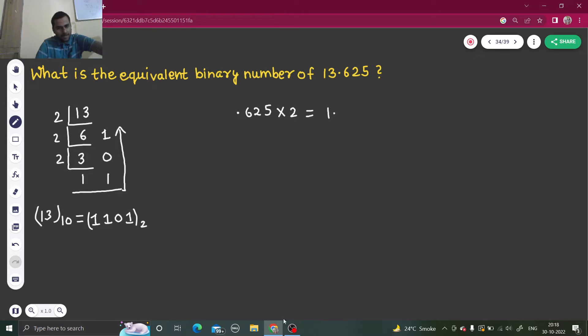What will you get? I think 625 times 2 is 1250, which means 1.250. Carefully listen: you have to store whatever is the integral part, so I have stored one, and take whatever is the fractional part to the next step and repeat.